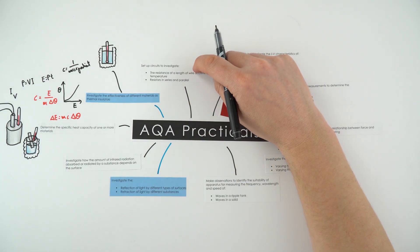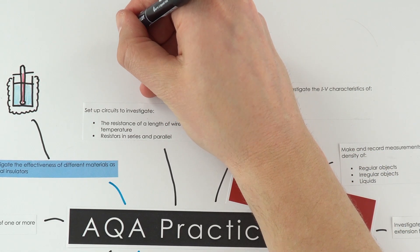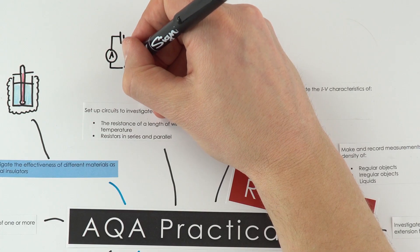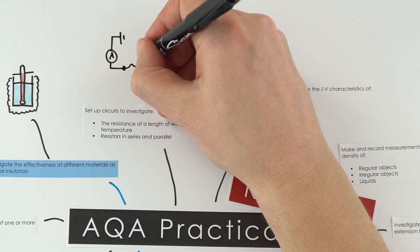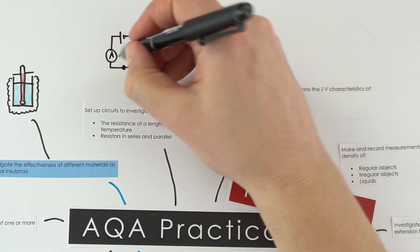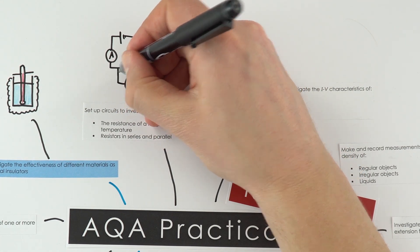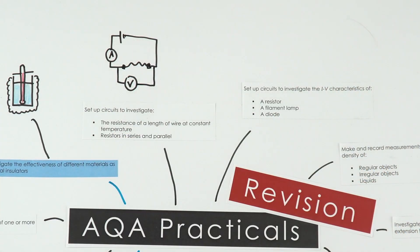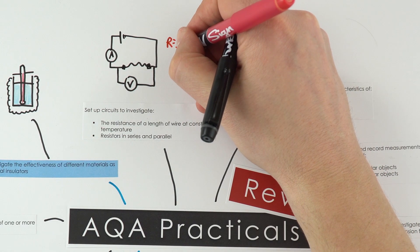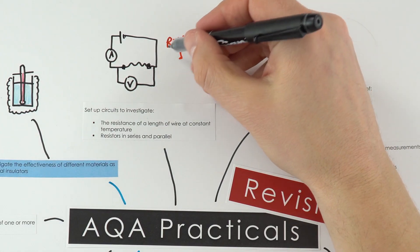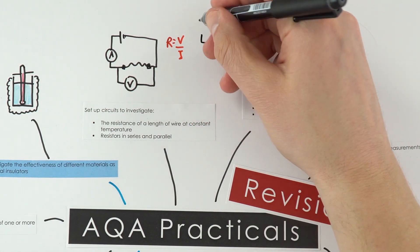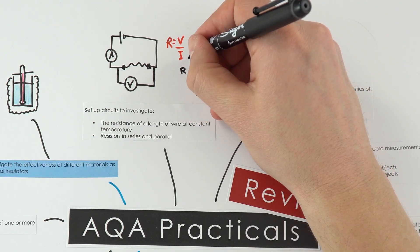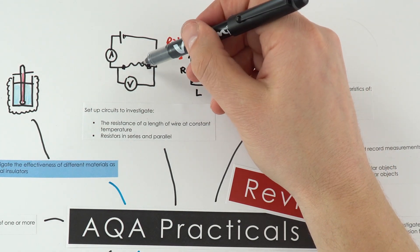To investigate how wire length affects resistance, set up a circuit with a power supply, an ammeter in series, and a voltmeter in parallel across your wire sample. Measure different lengths of wire; resistance equals potential difference divided by current. You should find that as the length of wire increases, resistance increases proportionally — double the length, double the resistance.